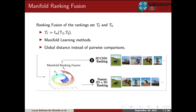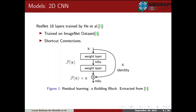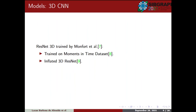Briefly detailing the models used, starting with the 2D CNN, we have a residual network trained by He et al., named ResNet-18. This model has 18 layers and was trained for the classification task on the ImageNet dataset. For the video sequence feature extraction, we use a pre-trained ResNet 3D proposed by Monfort et al. This model is an Inflated 3D ResNet, defined by the process proposed by Carreira et al. While using our pre-trained 3D models, the pooling kernels and features are inflated to a third dimension to be able to deal with the temporal dimension. The 3D model was trained on the Moments-in-Time dataset, which has more than 1 million videos.